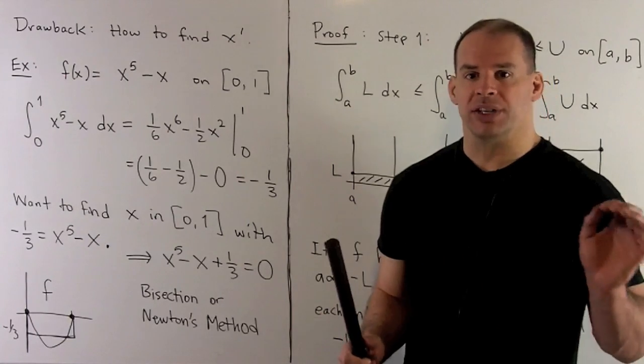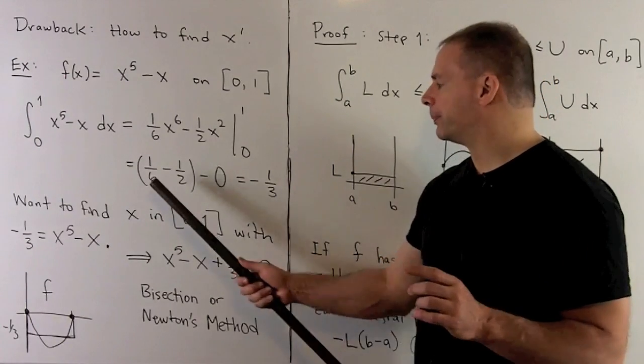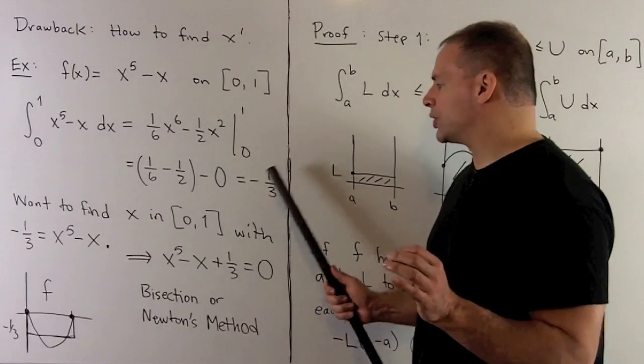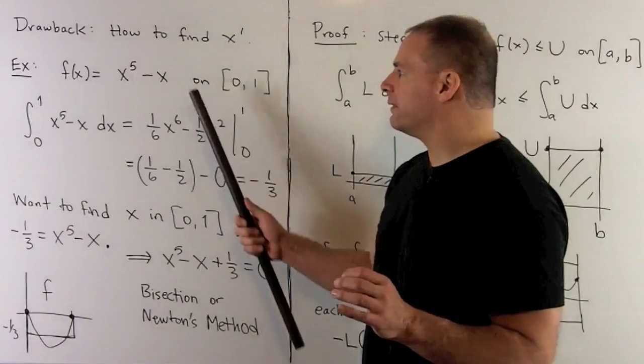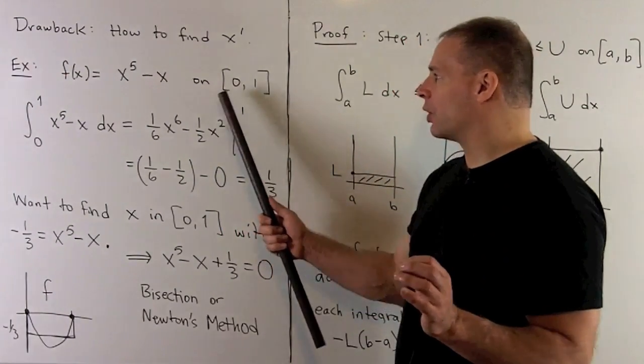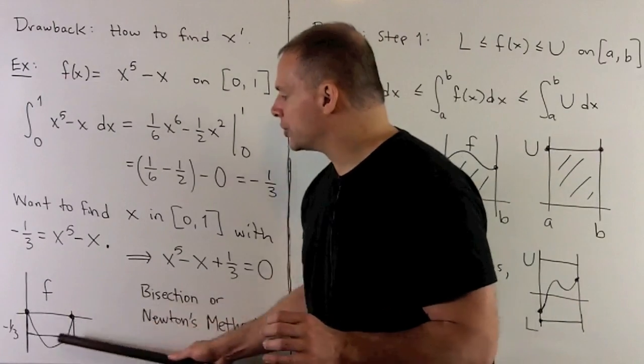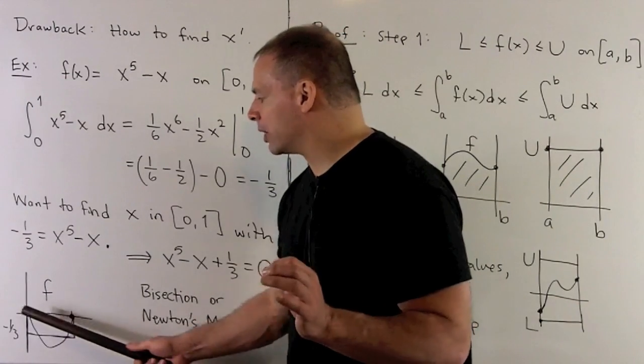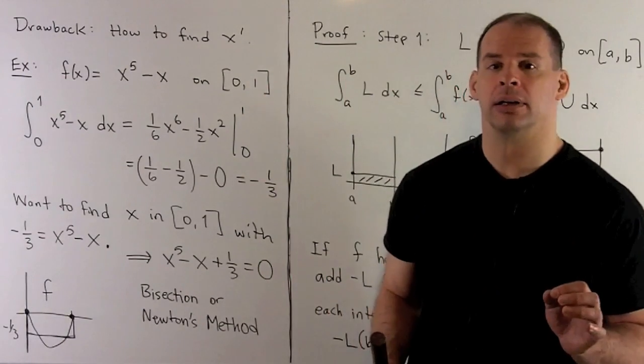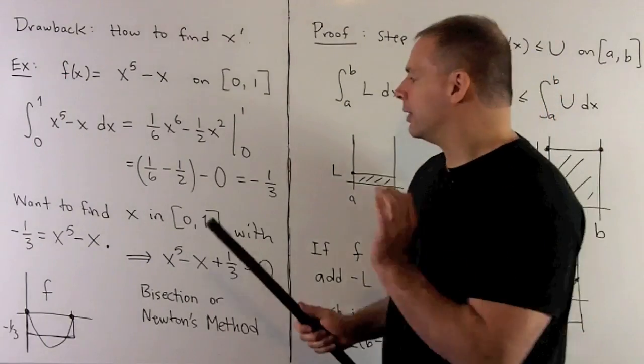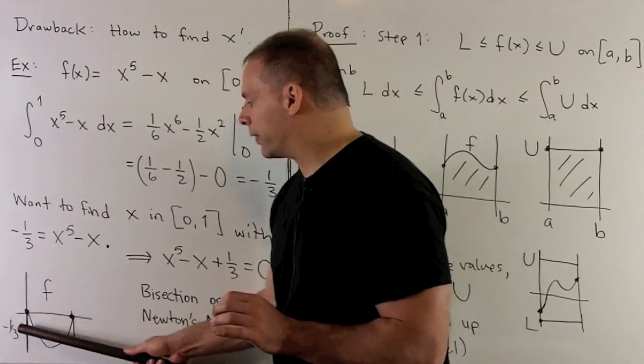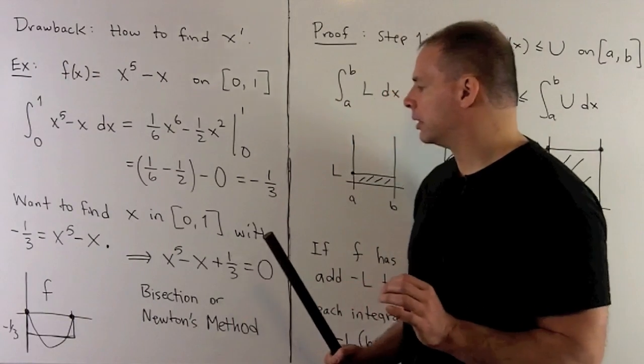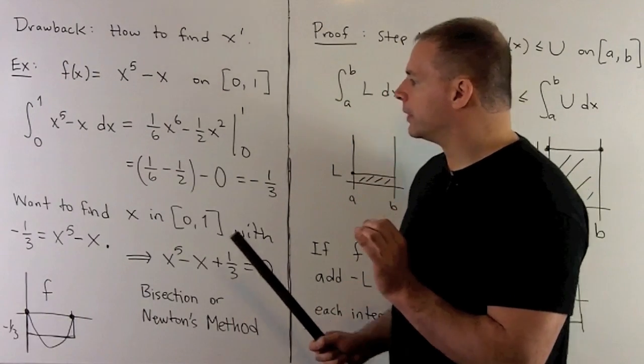So, 1/6 x^6 - 1/2 x^2. We evaluate at 1 and 0, take the difference. That gives us a minus 1/3. So, in this case, the graph of f is going to be below the x-axis over our interval. So, this is going to be the area, but it's going to pick up a sign. Then, this says the mean value is going to be equal to minus 1/3.